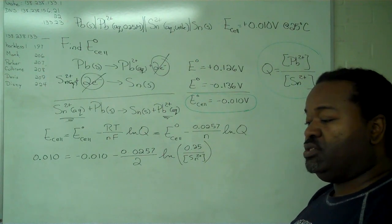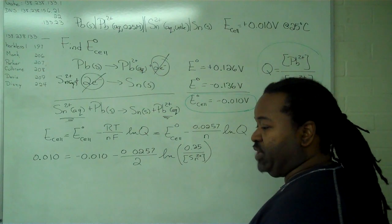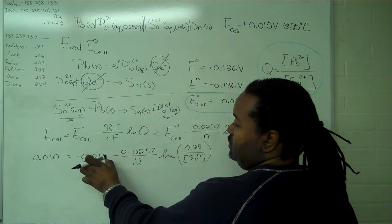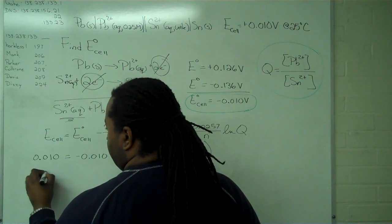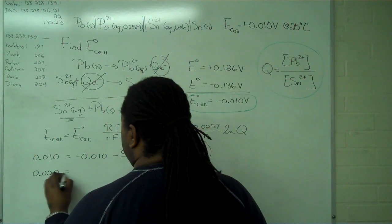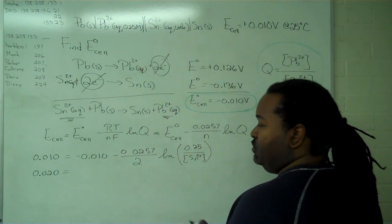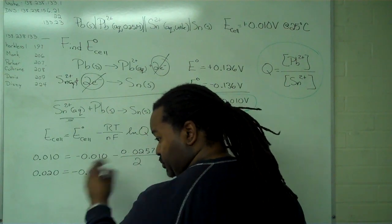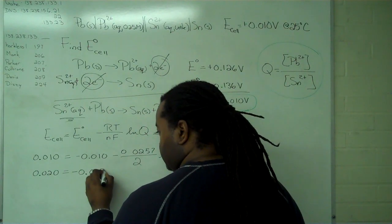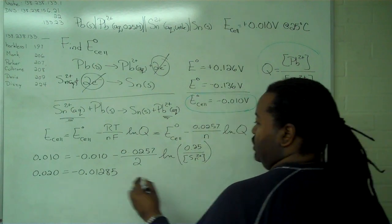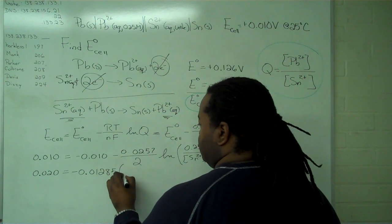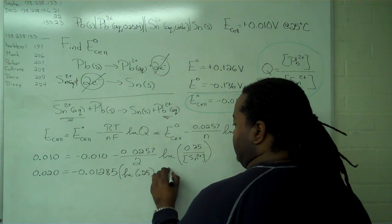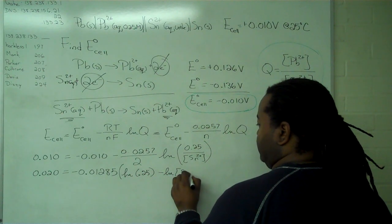Now we step through the math simplification. Adding 0.01 to both sides gives us 0.020. With the value 0.01285, we use logarithm rules to separate this: ln of 0.25 minus ln of the tin concentration.